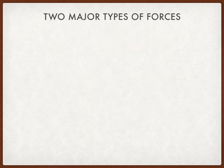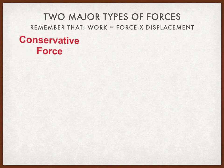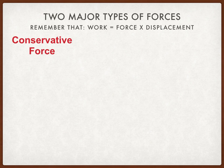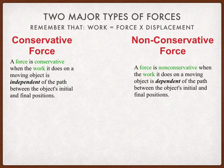We have to consider two major types of forces before we go deep into energy. Remember that work equals force times displacement. There are two types of force: conservative force and non-conservative force. A force is conservative when the work it does on an object is independent of the path between the object's initial and final position. A force is non-conservative when the work it does on a moving object is dependent on the path between the object's initial and final position.